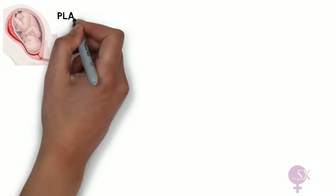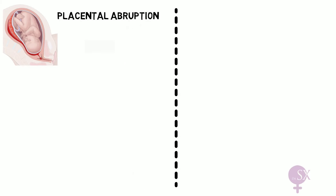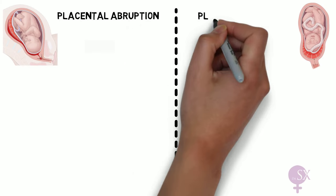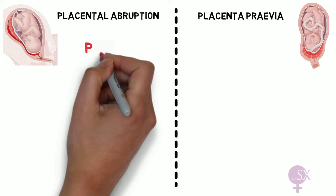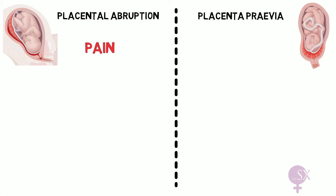If you haven't watched them already, now would be a great time to take a look at the videos on placental abruption and placenta previa, as these are the two most common causes of APH. Here we're going to focus on how we can differentiate between them in a clinical setting.